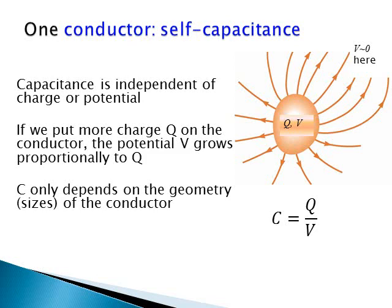So, the resulting ratio, called capacitance, only depends on the geometry, essentially sizes of the conductor.